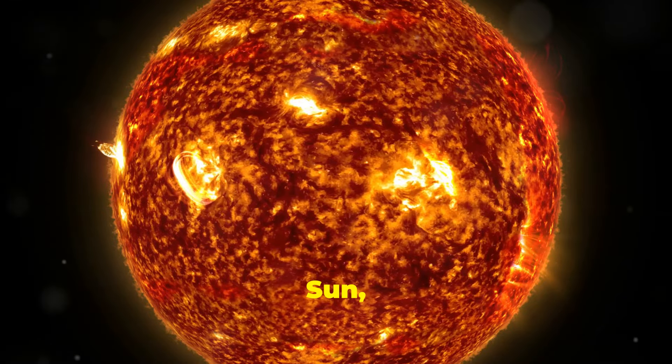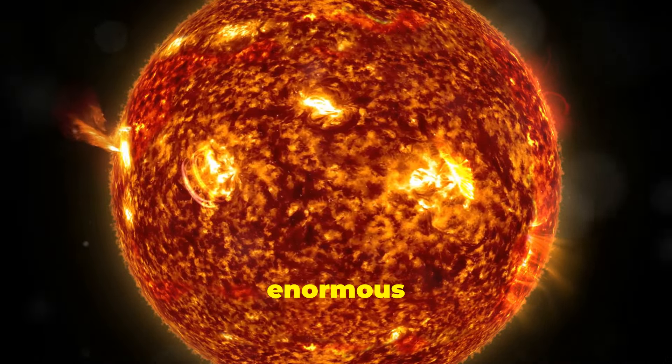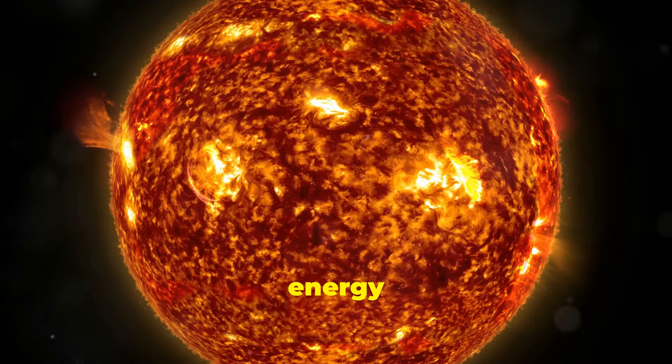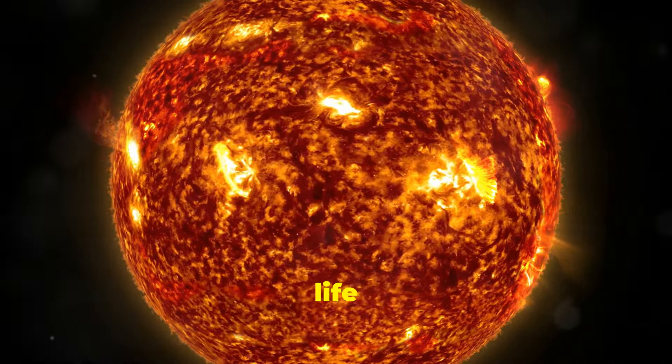At the core of the sun, nuclear fusion occurs, converting hydrogen into helium and releasing an enormous amount of energy. This energy travels through space and reaches Earth, providing the light and warmth that make life possible.